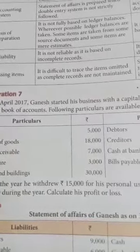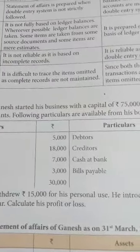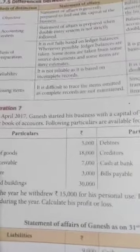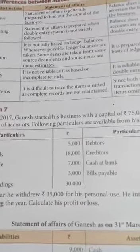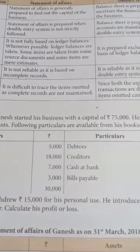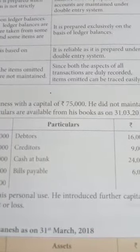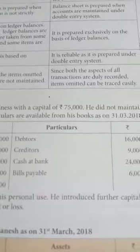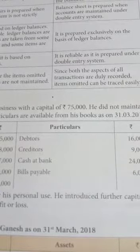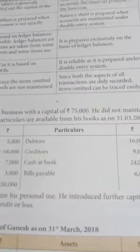Regarding reliability: the Statement of Affairs is non-reliable as it is based on incomplete records. A balance sheet is reliable as it is prepared on the double-entry system. Regarding missing items: it is difficult to trace missing items omitted when incomplete records are not maintained. With complete records maintained, if you have any missing items, we can get the missing items and the accounts will tally.